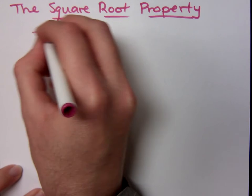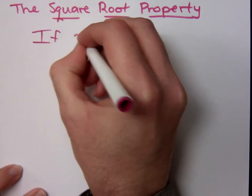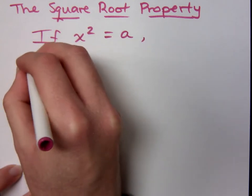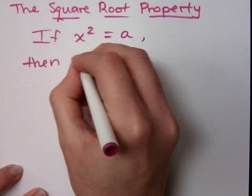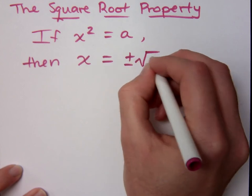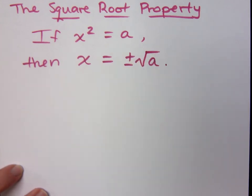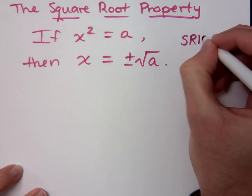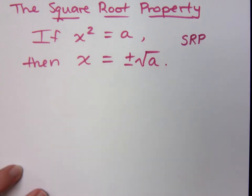Here's what the square root property says. If x squared is equal to a, then your solutions, represented by x, will be plus or minus the square root of a. This is called the square root property, and you will see me abbreviate this as SRP. This square root property is the foundation for this whole chapter. Without it, we get nothing.